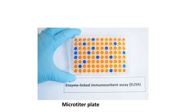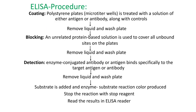The general ELISA procedure begins with coating — polystyrene microtiter wells are treated with a solution of either antigen or antibody along with controls. After incubation, remove the liquid and wash the plate with wash buffers. Next, blocking: an unrelated protein-based solution is used to cover all unbound sites on the plate, then remove liquid and wash.